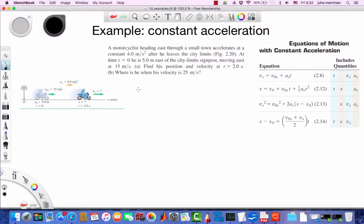Here we have a straightforward problem of constant acceleration. We have a motorcyclist who accelerates at a constant rate of 4 meters per second squared for a certain amount of time. In the first part, we'd like to find his position and velocity when two seconds have elapsed.